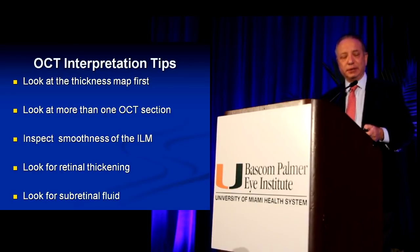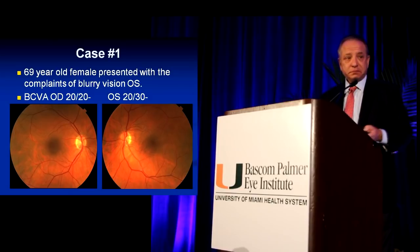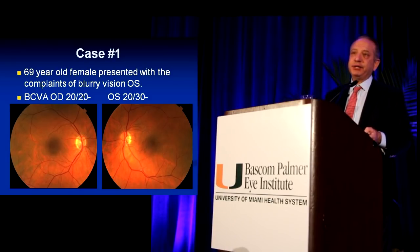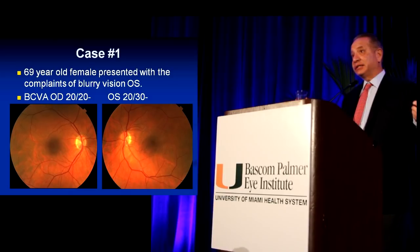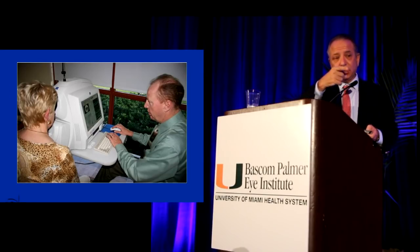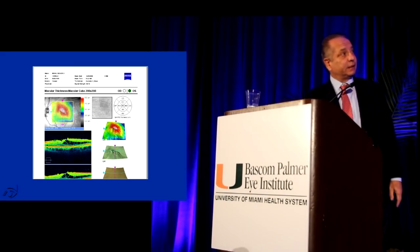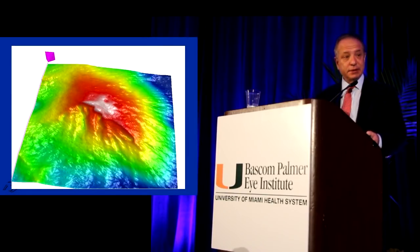Inspect the smoothness of the internal limiting membrane, look for retinal thickening, and look for subretinal fluid. Here is a patient who presented with blurry vision in the left eye. If you look at this patient with the 20-diopter lens and indirect ophthalmoscopy, the macula looks very good. With the 78-diopter lens on biomicroscopy, maybe not so good. Looking at the Cirrus machine scan, you can see immediately from the thickness map that it is thin.